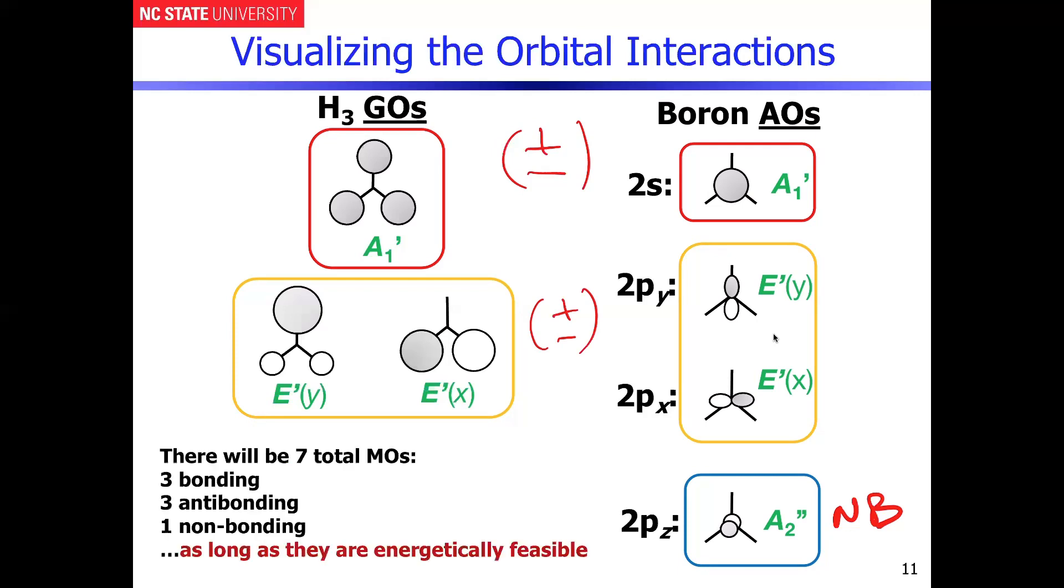Then we can see what the whole thing looks like. In the end, when you count, there's 1, 2, 3, 4, 5, 6, 7 total orbitals that are going to go into this molecular orbital diagram. We know that as a result we're going to get three bonding interactions, three anti-bonding interactions, and then finally the non-bonding one which is shown at the bottom.